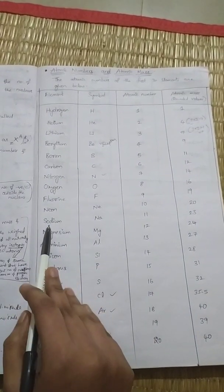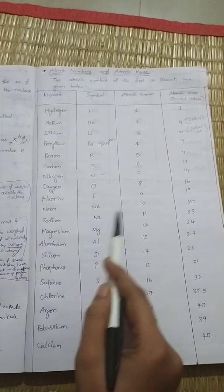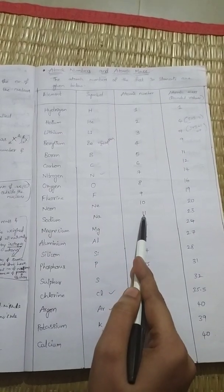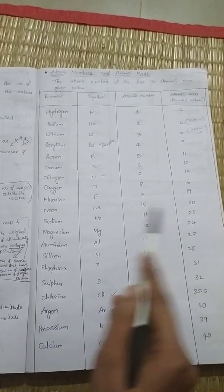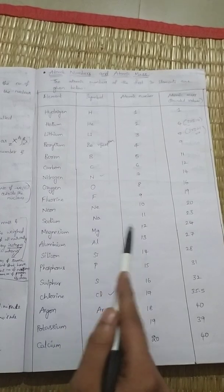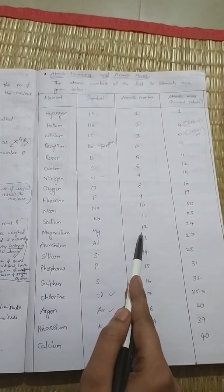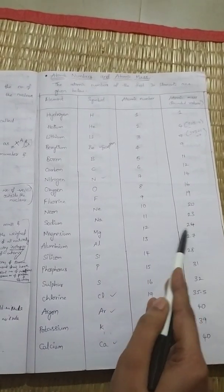Sodium: symbol Na, atomic number 11, atomic mass 23. Magnesium: symbol Mg, atomic number 12, atomic mass 24.